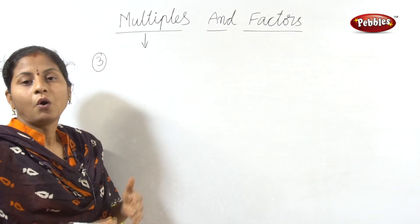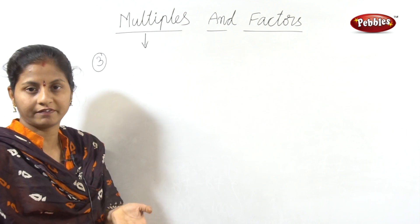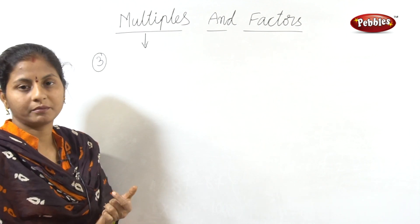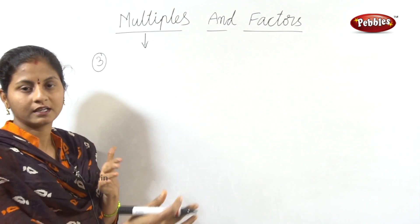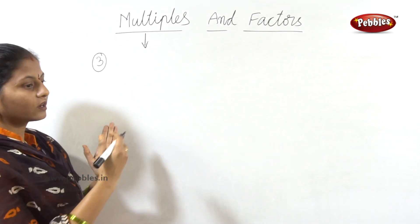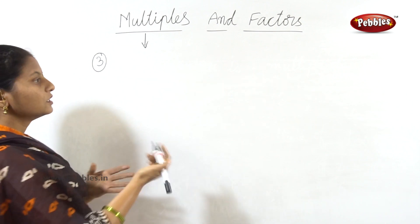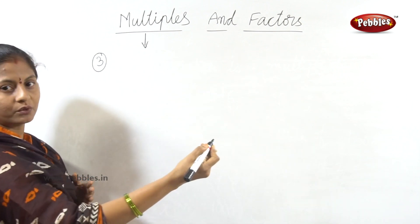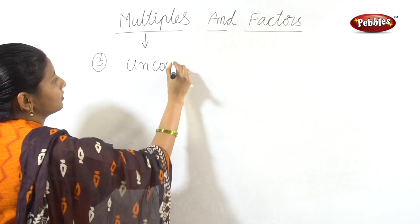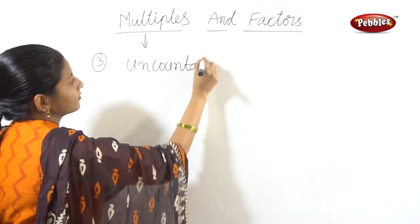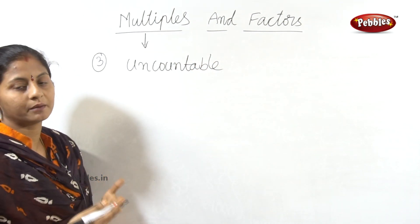Next: multiples of any number — like 3, 4, 5, 10, 15 — are uncountable, endless, infinite numbers. Multiples means we multiply with natural numbers, so if we keep multiplying, the multiples are uncountable, or infinite.